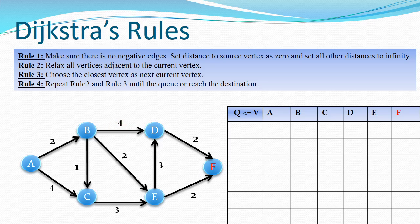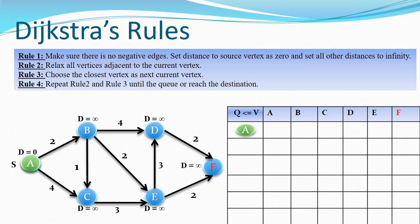If you want to do any search or find any path, you have to choose a starting and a final vertex. Let us choose A as our starting vertex and F as our final vertex, so our goal is to find the shortest path from A to F. Next, set the distance to the source vertex as 0 and set all other distances to infinity, because we haven't explored them yet and have no path values from A to any other nodes.